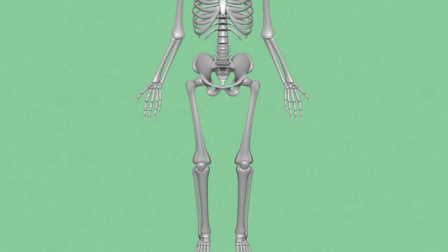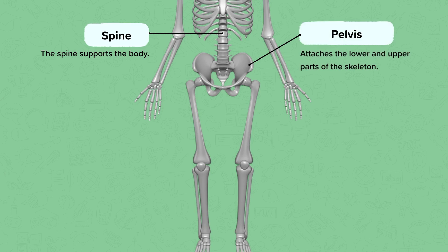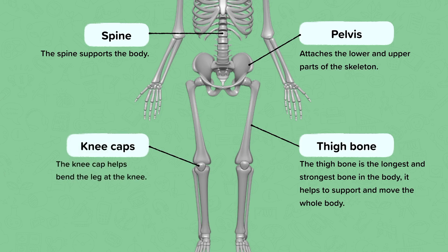Next we're going to label the spine or the backbone. The spine supports the whole body and runs from the bottom to the top behind the rib cage. Remember, vertebrates all have a spine or backbone. The pelvis is a fairly large bone that attaches the lower and upper parts of the skeleton. The thigh bone is actually your longest and strongest bone in the body and it helps support and move the whole body. Your kneecaps are another bone that helps your leg bend at the knee.